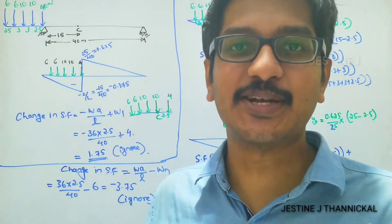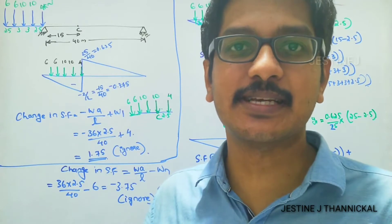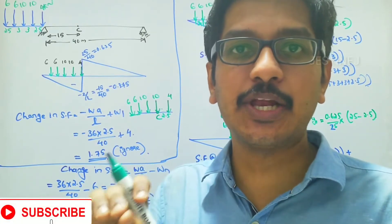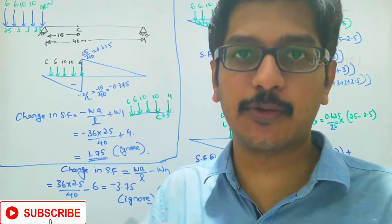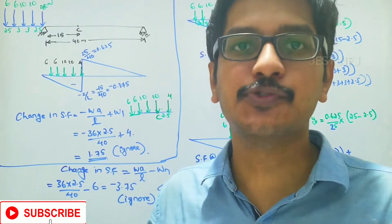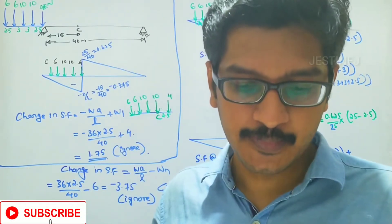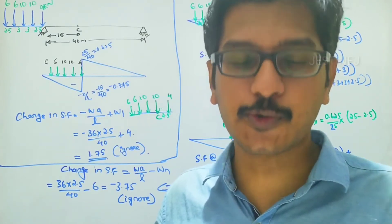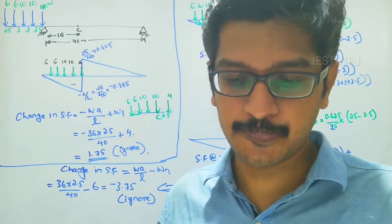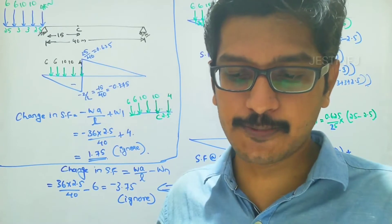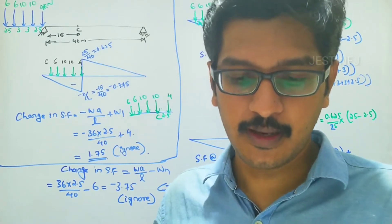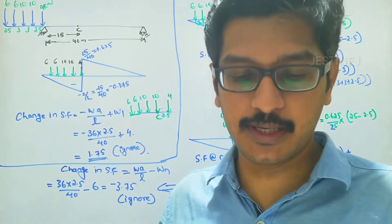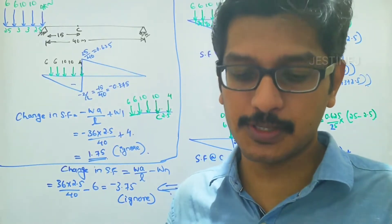Welcome to a new video lecture. Today we will discuss a problem related to a train of constant load traveling across a beam. A train of loads shown in the figure is crossing a simply supported beam of span 40 meters. Calculate the maximum shear force at a section 15 meters from the left support.